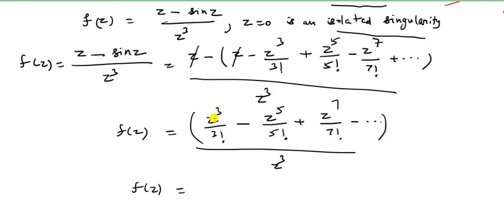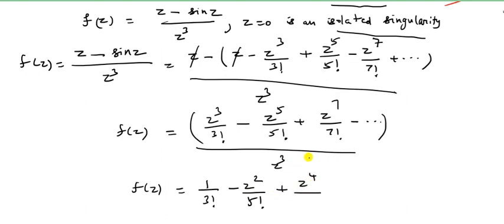After substitution and cancellation, f of z equals z cube divided by 3 factorial divided by z cube. The z cubes cancel, giving 1 by 3 factorial, minus z squared divided by 5 factorial, plus z power 4 divided by 7 factorial, and so on.